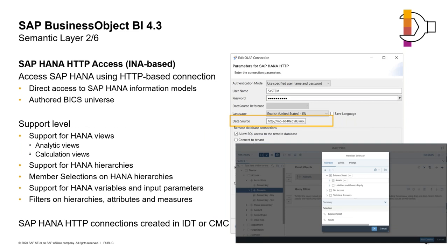Another improvement concerns SAP HANA. We now fully support HTTP-based connections on top of SAP HANA views. This is available when using direct access to SAP HANA information models in Web Intelligence, and also includes BICS universes. This mode brings several advantages: support for most HANA views including analytical views and calculation views, support for HANA hierarchies with member selections, support for pretty much all HANA variables and input parameters, and the ability to filter on ER keys, attributes, and measures.